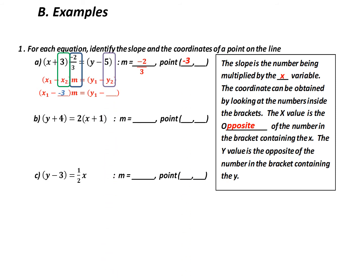Now looking at my y values: it is y minus 5. My original equation is y1 minus y2, so what number would I subtract to get negative 5? That would be positive 5. So my y value is positive 5. Stop the tape now and try parts b and c. When you're ready for me to do it, restart the tape.